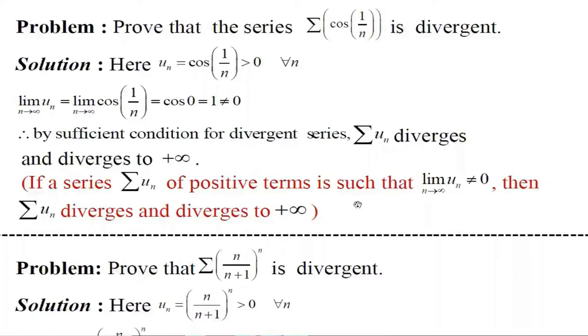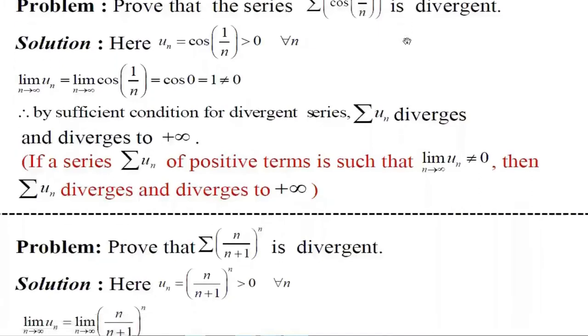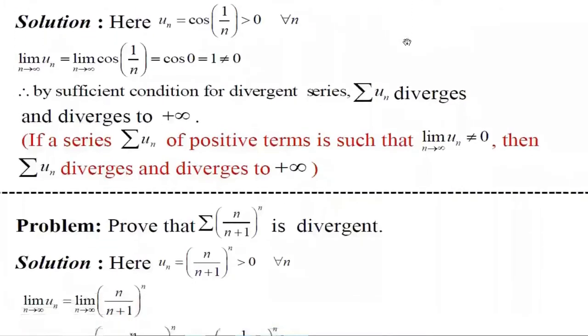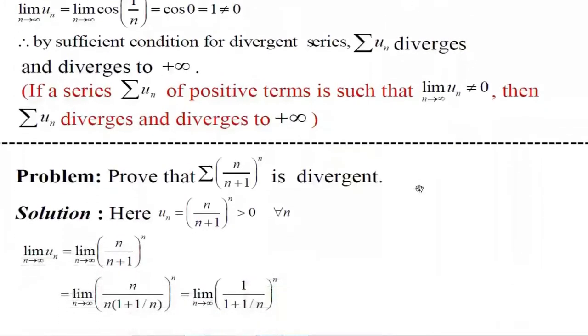Therefore, according to this condition, the given series Σcos(1/n) is divergent.